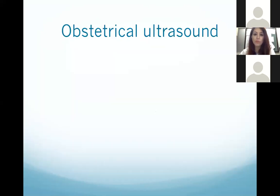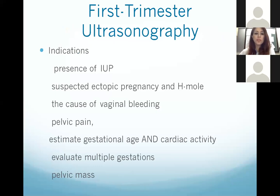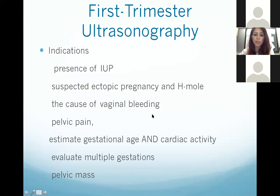Now we move on to obstetrical ultrasounds. The indications for first trimester ultrasound are: confirmation of intrauterine pregnancy, suspected ectopic pregnancy or hydatidiform mole, cause of vaginal bleeding in the first trimester, pelvic pain during pregnancy, estimation of gestational age and cardiac activity, evaluation of multiple gestations, and any concurrent pelvic mass.